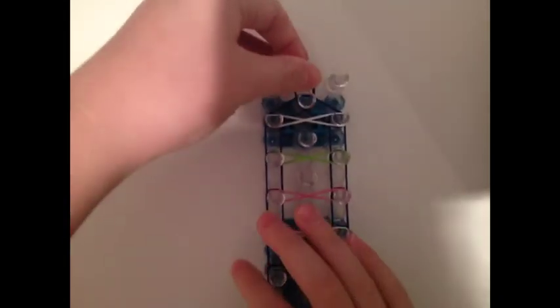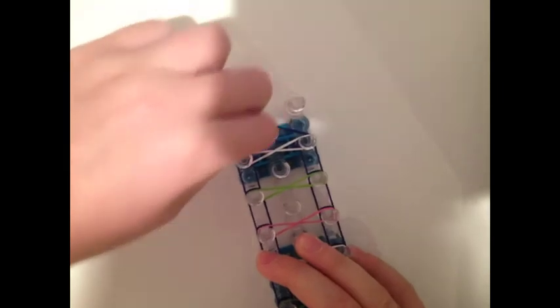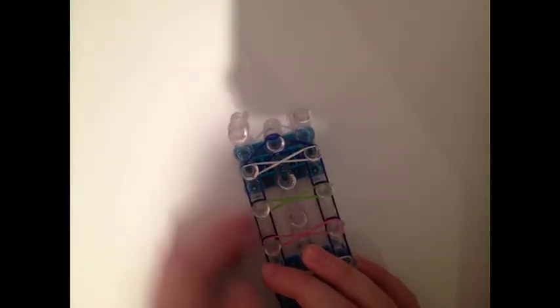Once we've gone on all of these pegs, all the way up your loom, we're going to take a capping band. This is the last band we'll be using for our main bracelet before we start our extension. We're going to take it and twist it twice on that peg, like so.